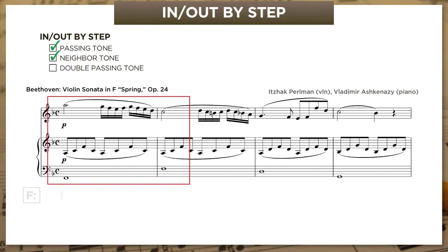Looking at the first bar: the harmony is the tonic chord F major, spelled F-A-C. Red notes highlight all the non-chord tones—everything that's not F, A, or C. Looking at just the black notes, we see Beethoven moving down an F major arpeggio: A down to F, then down to C. The melody ornaments and fills out that arpeggio with all kinds of stepwise motion. The first non-chord tone is a passing tone, passing through G between A and F.